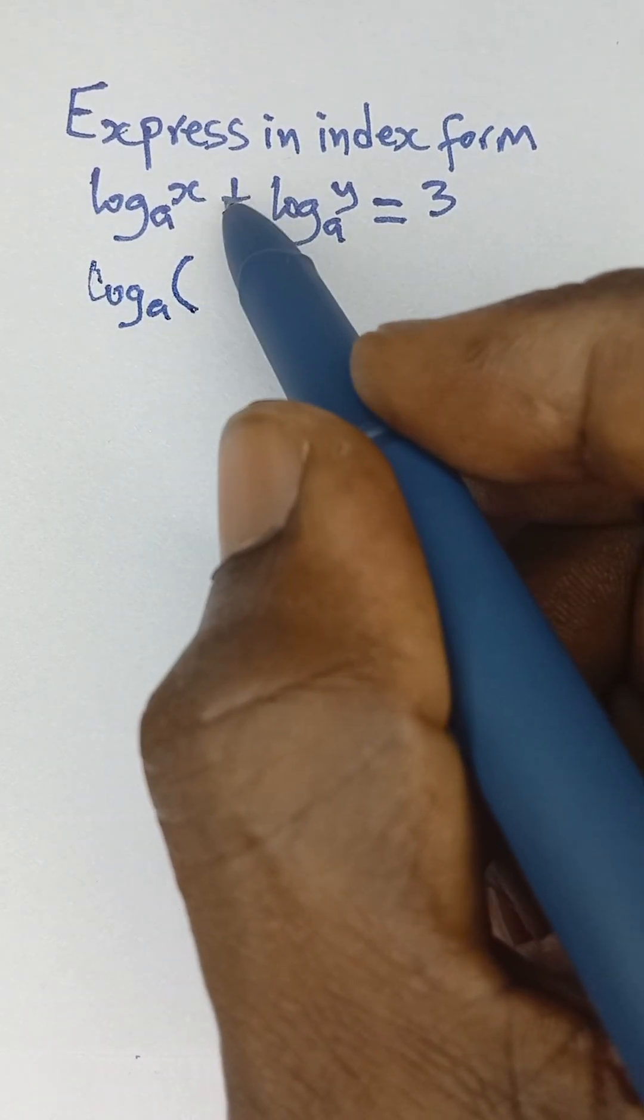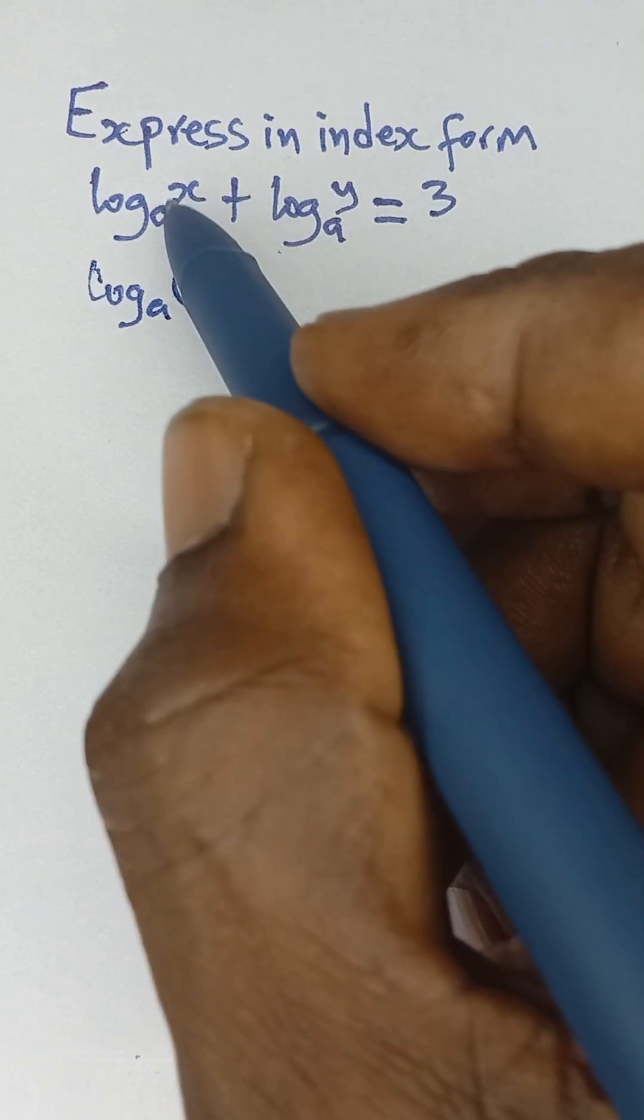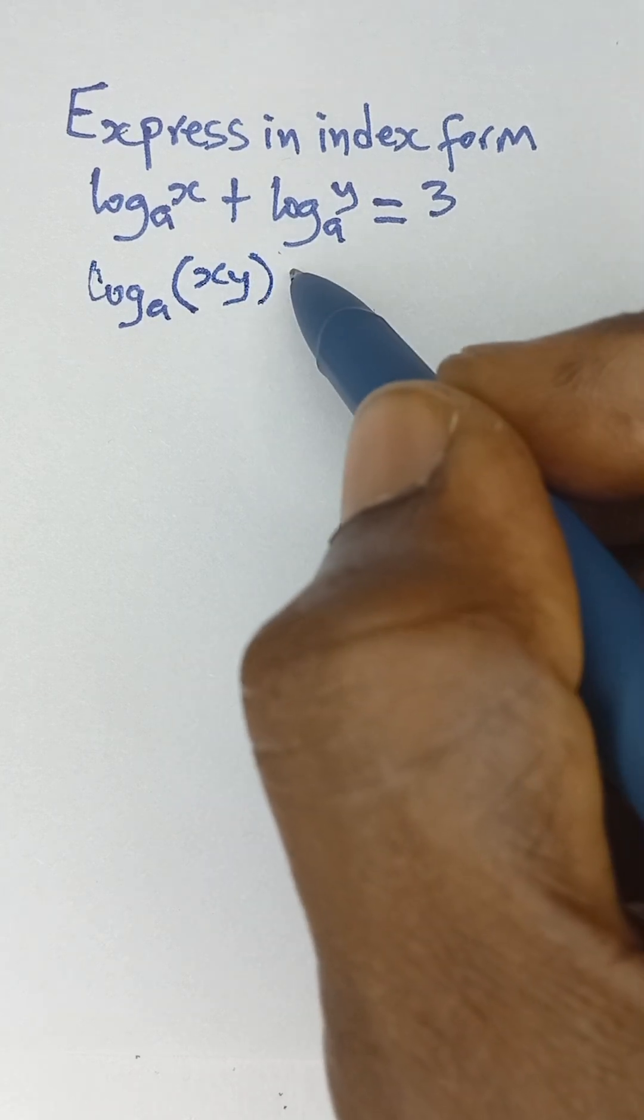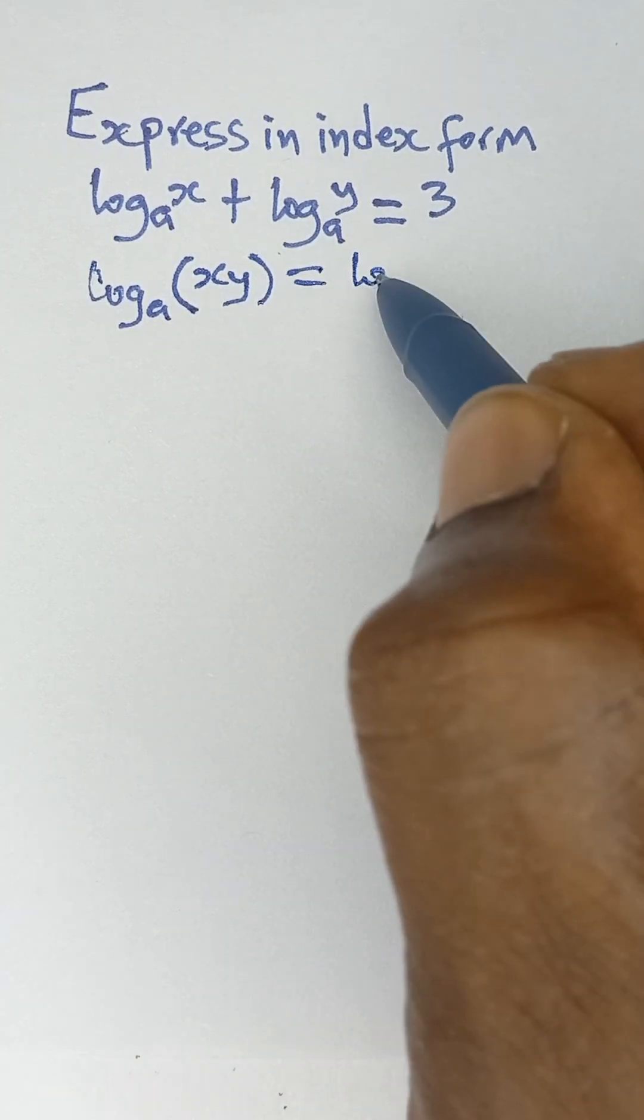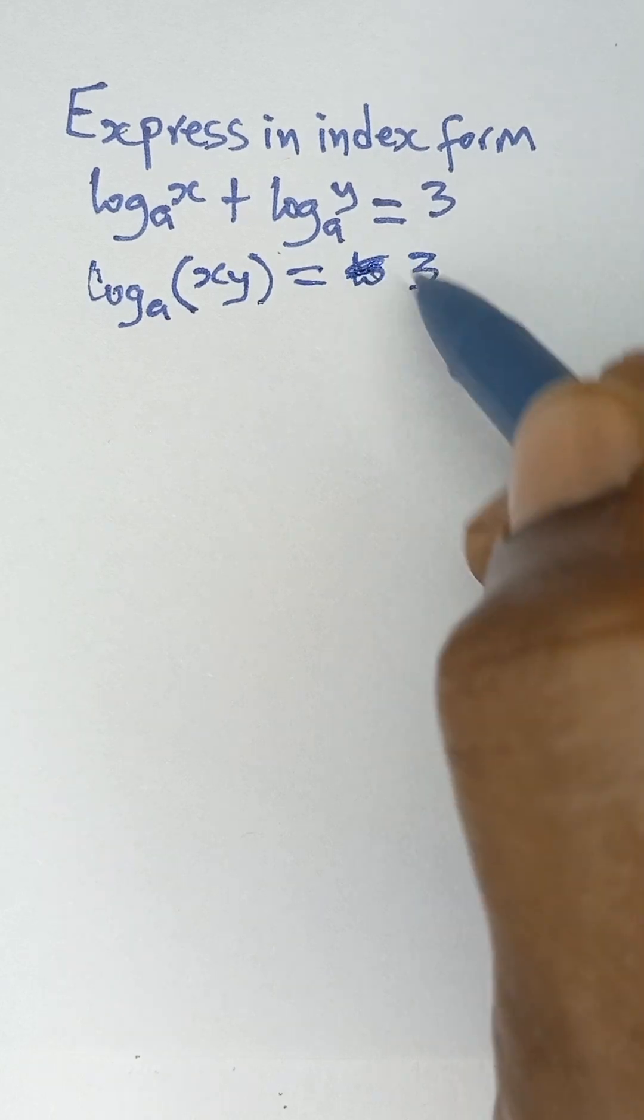Because of this addition sign here, we simply multiply these two terms x y. And that will be equal to three on the right hand side.